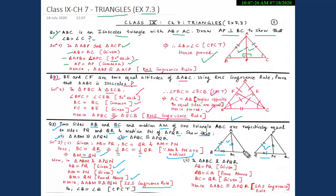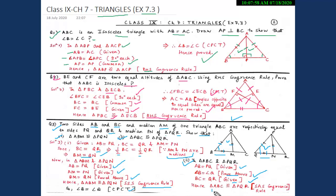Since they are congruent, angle B equals angle Q by CPCT. Now for the second part, to prove triangle ABC is congruent to triangle PQR: side AB equals PQ (given), angle B equals angle Q (proved above), and side BC equals QR (given). Therefore triangle ABC is congruent to triangle PQR by the Side-Angle-Side congruency criteria.